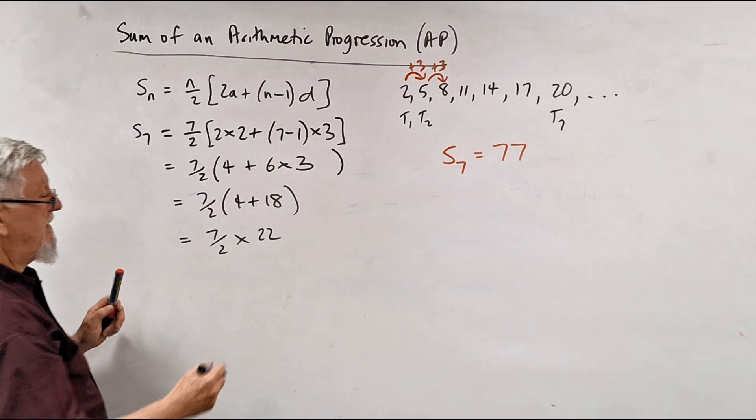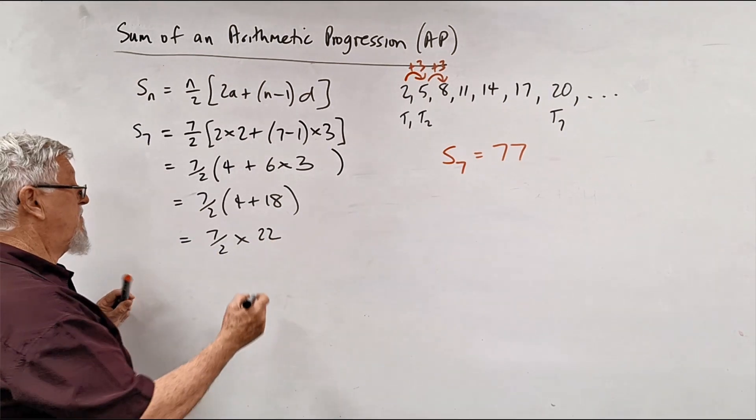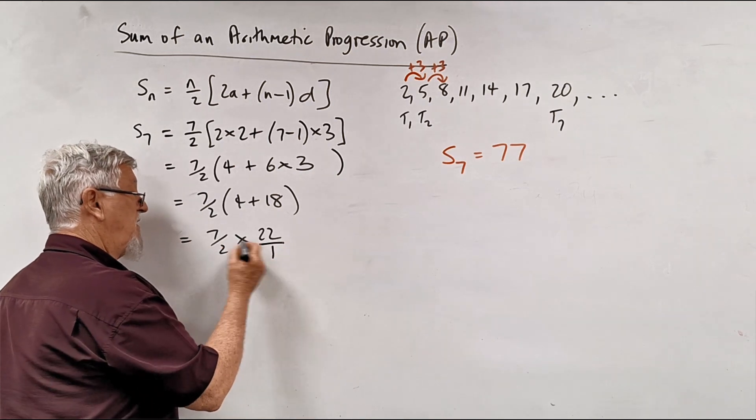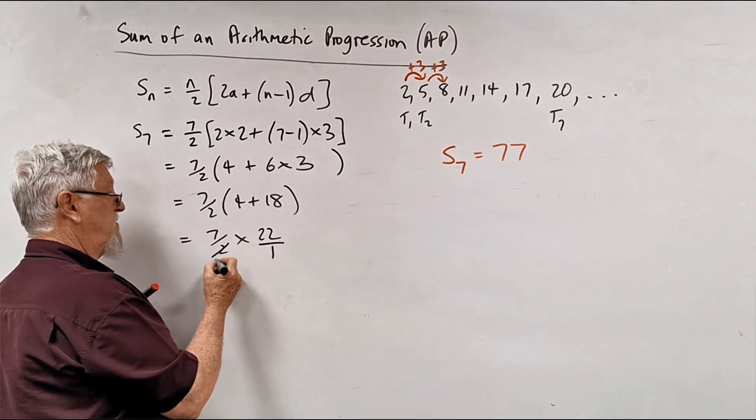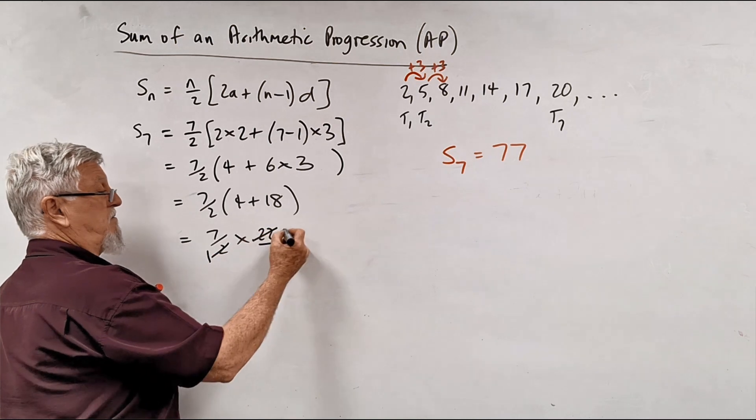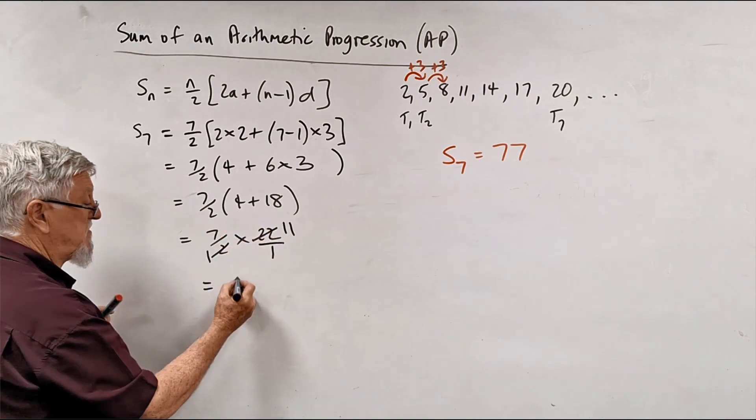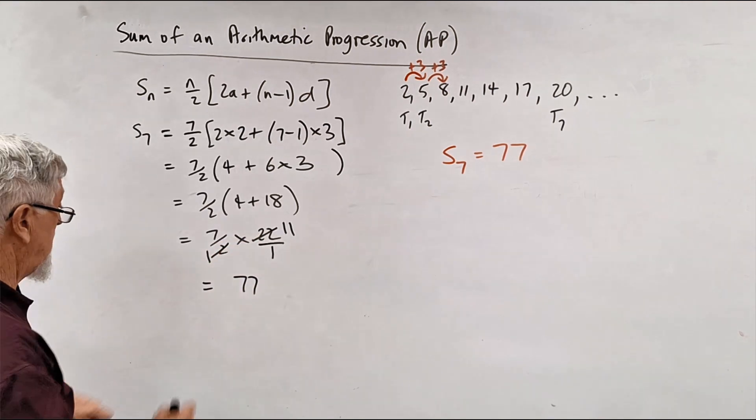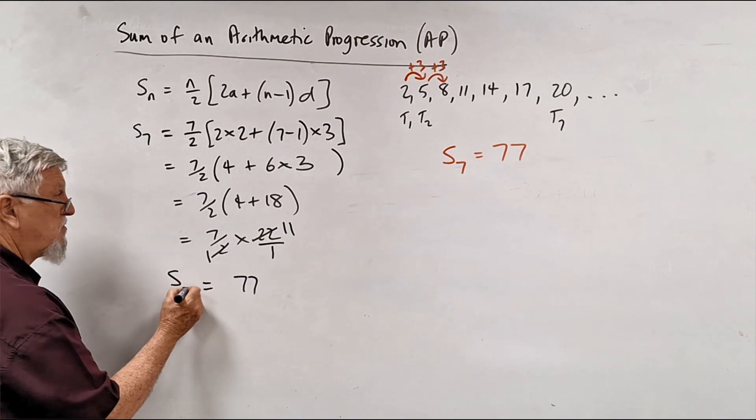We've got 7 on 2 multiplied by 22. Now back to fractions. You could multiply the tops and multiply the bottoms. Now remember, that's really a 22 on 1. That's even and that's even. So I can go 2 into 2 goes 1. 2 into 22 goes 11. And then we've got 7 times 11 is 77. You could write 77 over 1, but you've got 77.